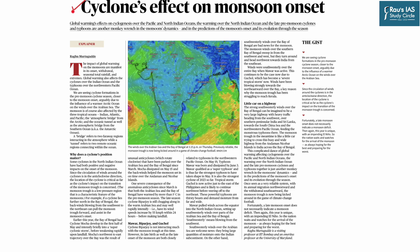This article of The Hindu newspaper appeared in the Text and Context section and talks about the cyclonic effects on the monsoon which onsets in India. Monsoon onset comes in the month of June from the state of Kerala, because this is where southwesterly winds enter the Indian subcontinent. Based on this understanding, let us go through the question.